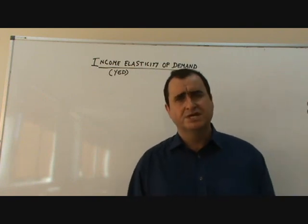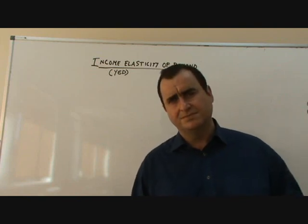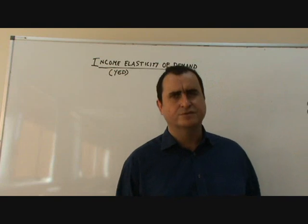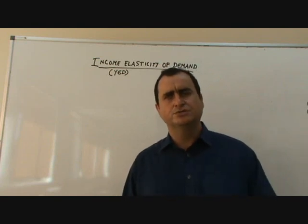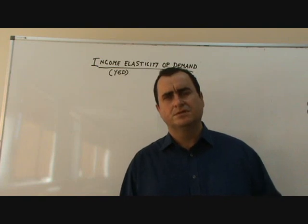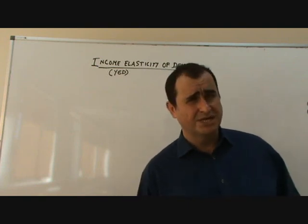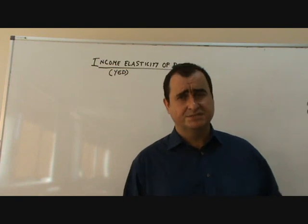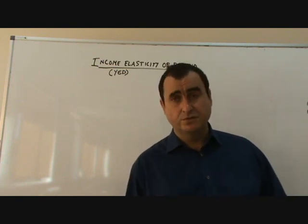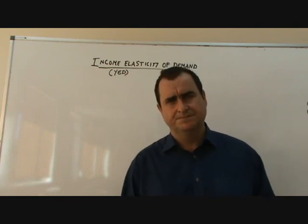For most goods, a change in income will lead to a corresponding change in demand in the same direction. If our income goes up, our demand for the good goes up. We call those goods normal goods. But for some goods, the demand changes in the opposite direction to income — if our income rises, demand falls, and vice versa. These goods are called inferior goods.